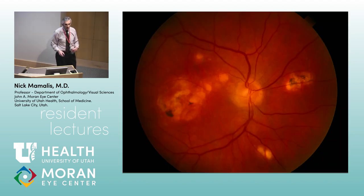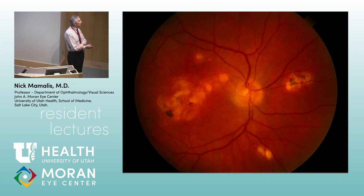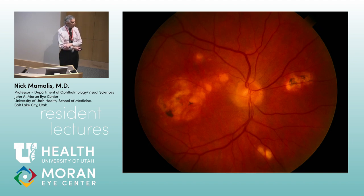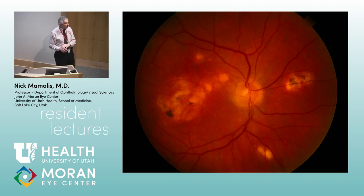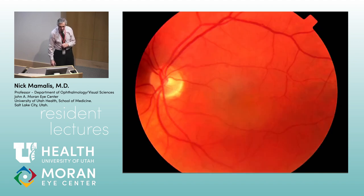Here we see focal areas of scarring/infarct — given the pattern, an infectious cause is possible. These are the characteristic peripheral 'punched-out' lesions of presumed ocular histoplasmosis (POHS). It's 'presumed' because it's very rare to actually prove the organism is there. Patients will have blood tests showing prior histo exposure, and it's seen in endemic areas. You get peripheral punched-out lesions plus macular lesions and sometimes subretinal neovascularization — much like AMD.